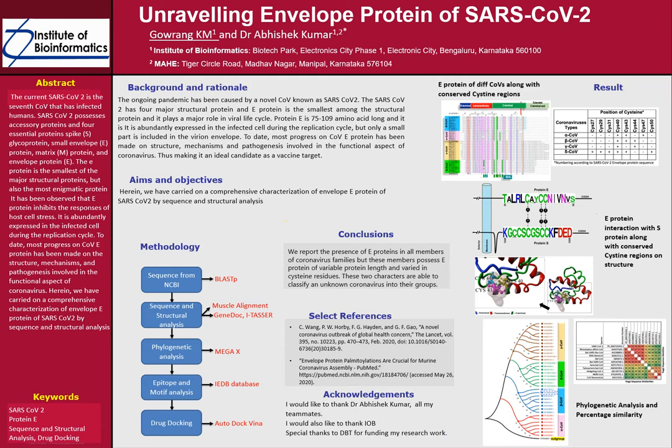We also found that alpha coronaviruses have the smallest E-protein compared to the other genera, whereas gamma coronavirus has the largest. We also found conserved cysteine regions, and these conserved regions were specific to each genus. The cysteine conserved at position 40 is conserved across all four genera.